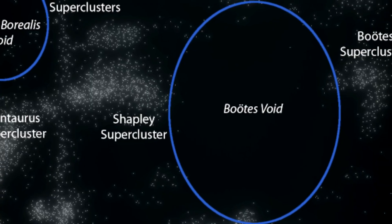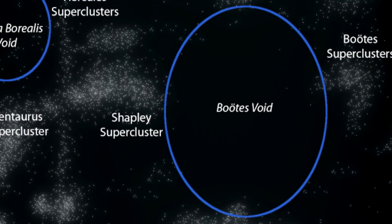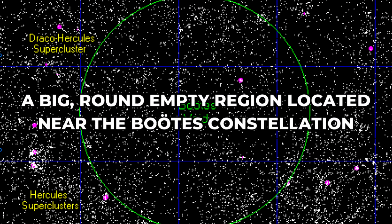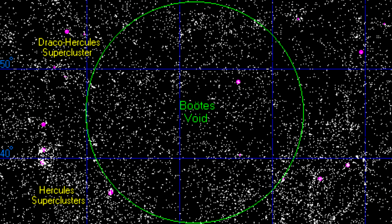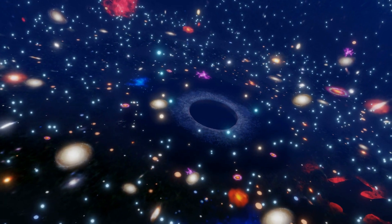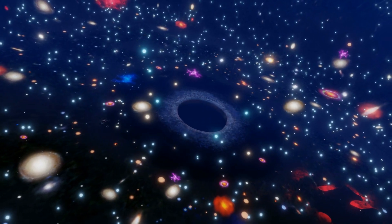The Boötes Void, often called the Great Nothing, is a big, round, empty region located near the Boötes constellation. Unlike other parts of the universe, this region has very few galaxies. That's why it's called a void.